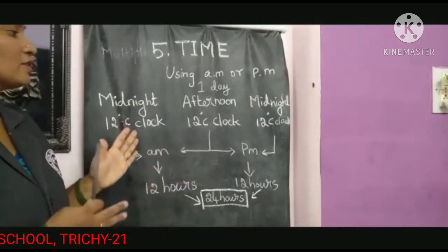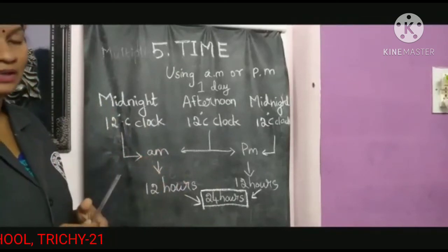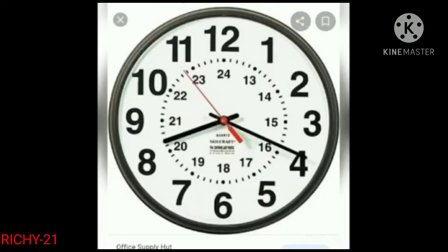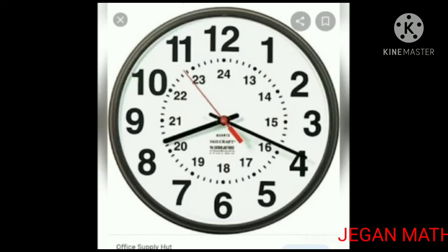Now let's see the difference between 12-hour and 24-hour time. The 24-hour clock is the most commonly used time notation in the world. The 24-hour clock does not use AM or PM — this is called railway time, and it is commonly used in railway schedules.